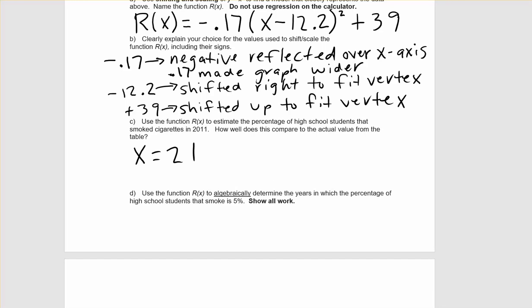The next thing we are asked to do is use our function to estimate the percent of high school students that smoked cigarettes in 2011. From our table above, we can see that 2011 is an X value of 21. So essentially what we are doing is finding R of 21, replacing all of our X values with 21. In our calculator it should look like this.